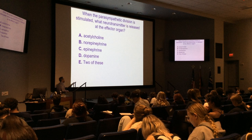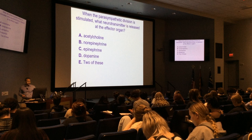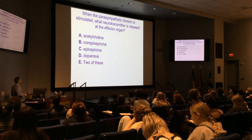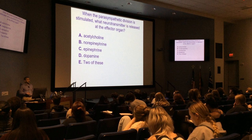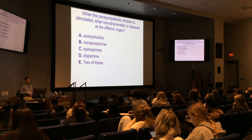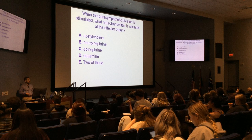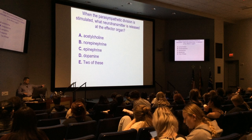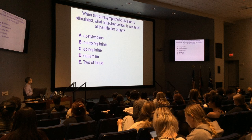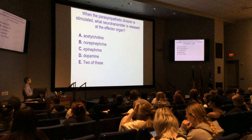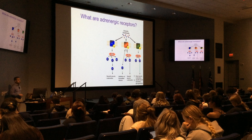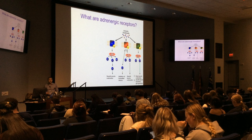So the parasympathetic division is stimulated — which neurotransmitter is released at the effector organ? Acetylcholine, norepinephrine, epinephrine, dopamine, or two of the above? It is acetylcholine. It is not norepinephrine or epinephrine — that's sympathetic.